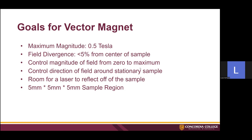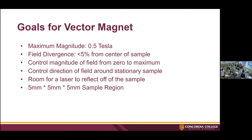The goals for our vector magnet are: a maximum magnitude of half a Tesla — we're okay with going greater than that because that gives us more freedom to study more interesting properties. We want a field divergence of less than 5% from the center of the sample to any point in the field. We want to control the magnitude smoothly from zero Tesla all the way to its maximum magnitude, and control the direction of the field 360 degrees around the sample. We also need to leave room in the middle for a laser to reflect off the sample, and we want our sample region to be a minimum of 5 millimeters by 5 millimeters cubed.